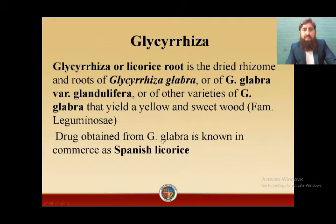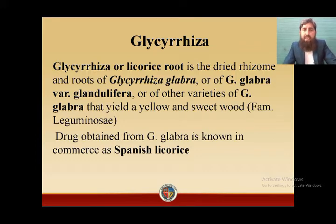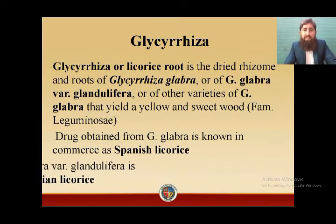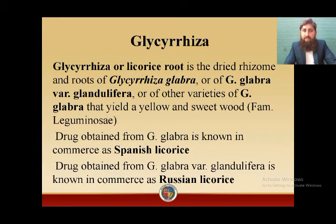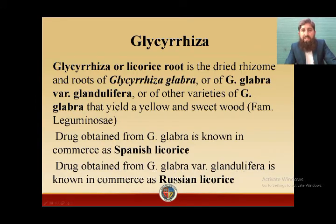Drug obtained from Glycyrrhiza glabra is known in commerce as Spanish licorice. Glycyrrhiza glabra is available in two commercial varieties: Spanish licorice, obtained from Glycyrrhiza glabra, and Russian licorice, obtained from Glycyrrhiza glabra var. glandulifera.